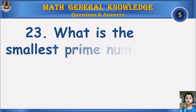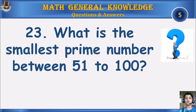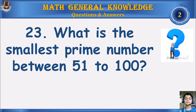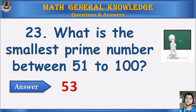What is the smallest prime number between 51 to 100? Your time starts. Answer: 53.